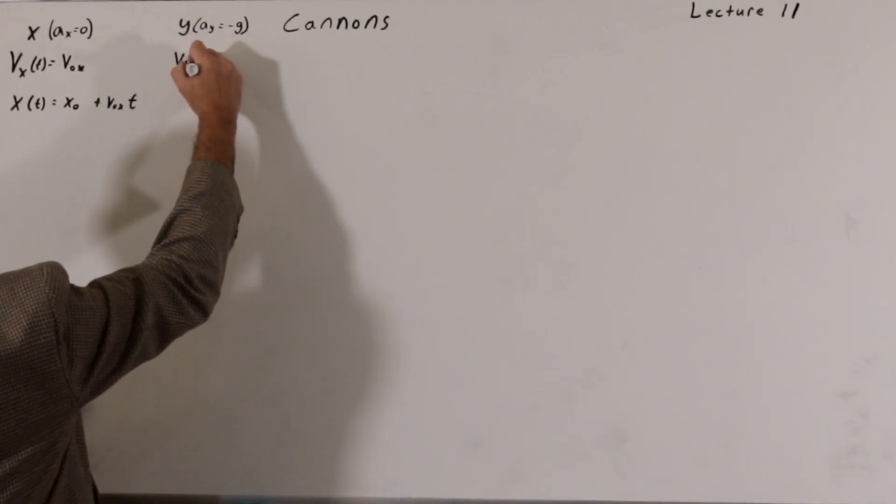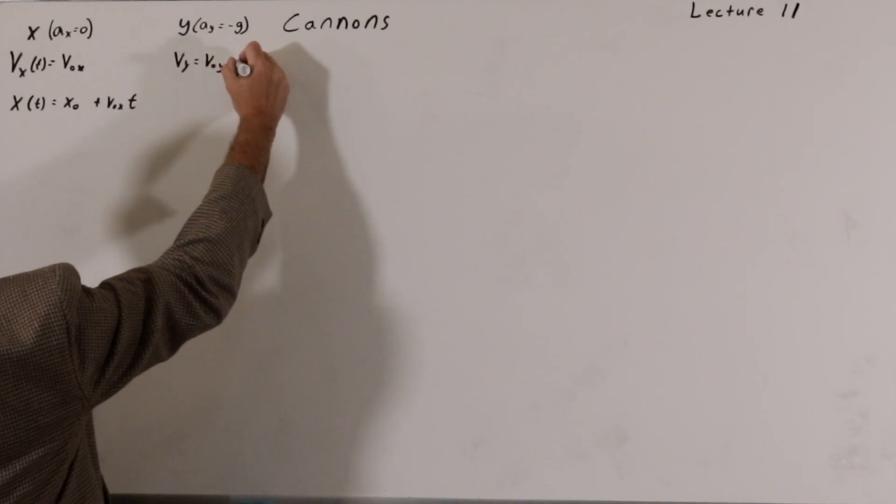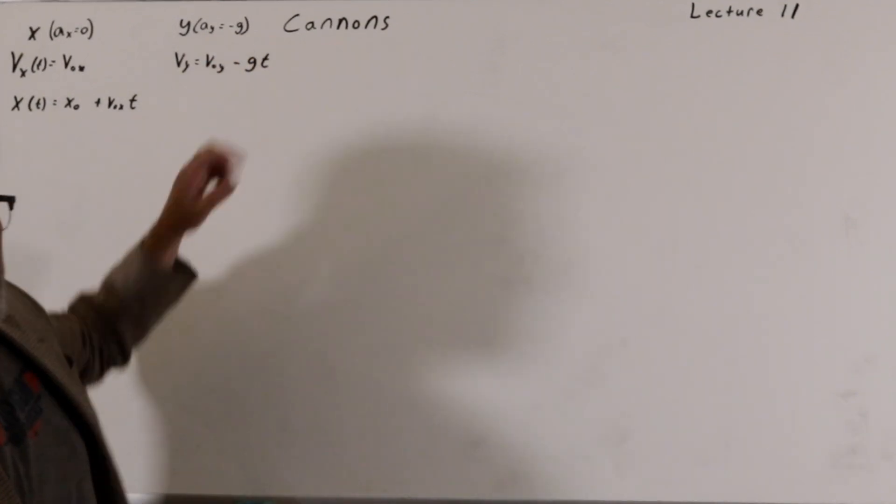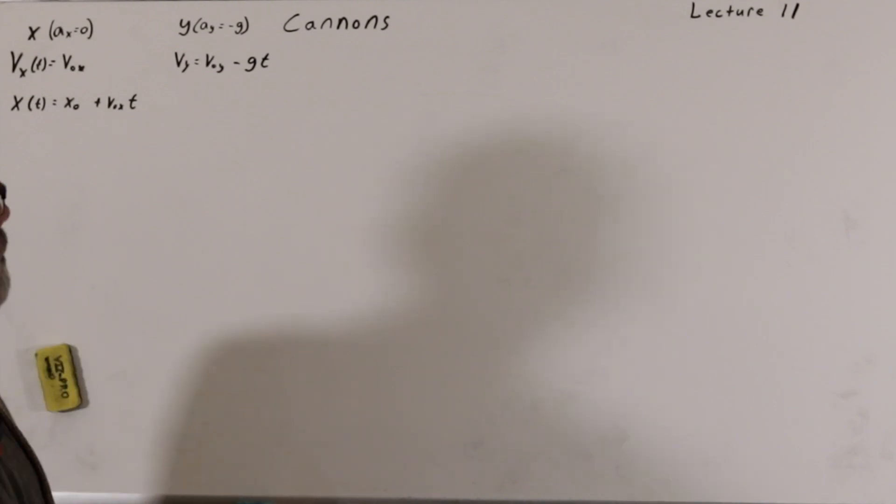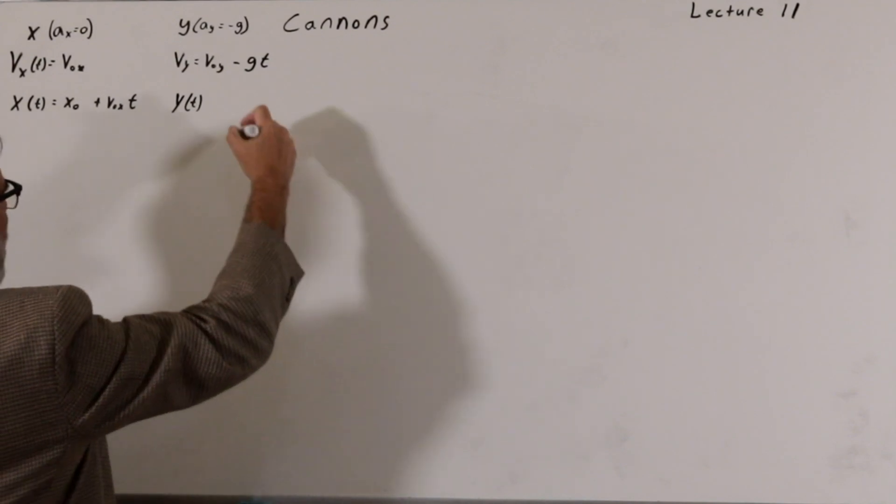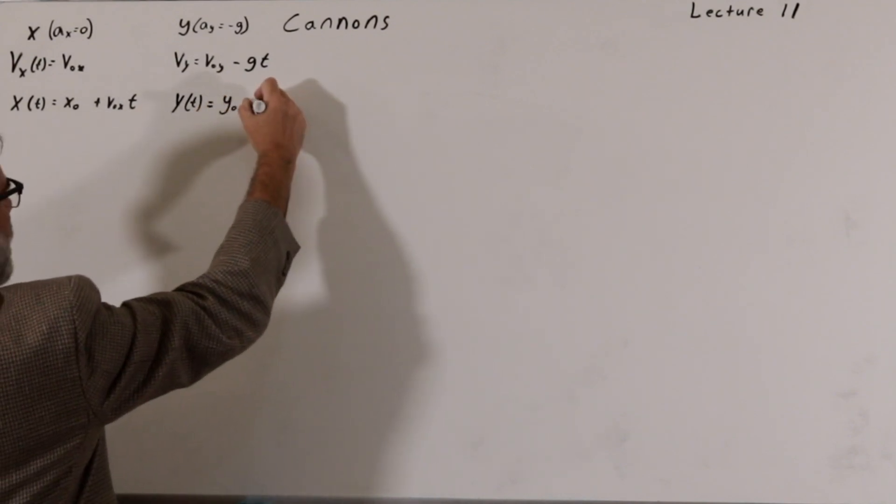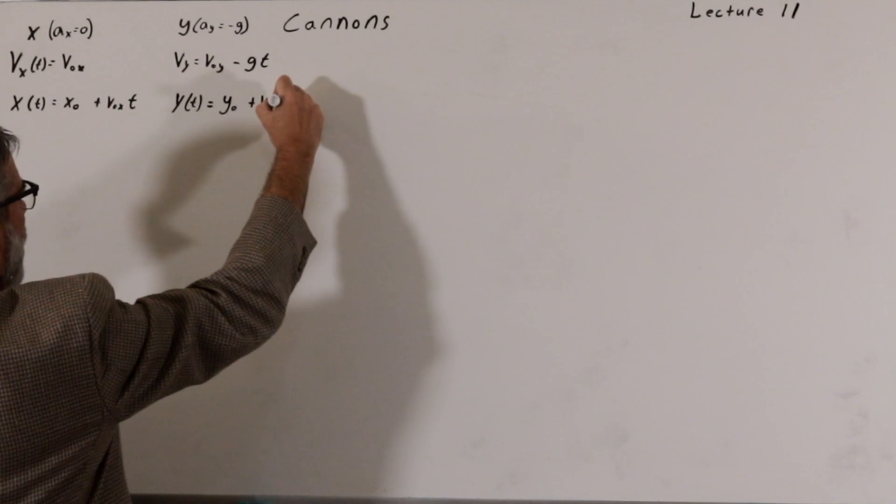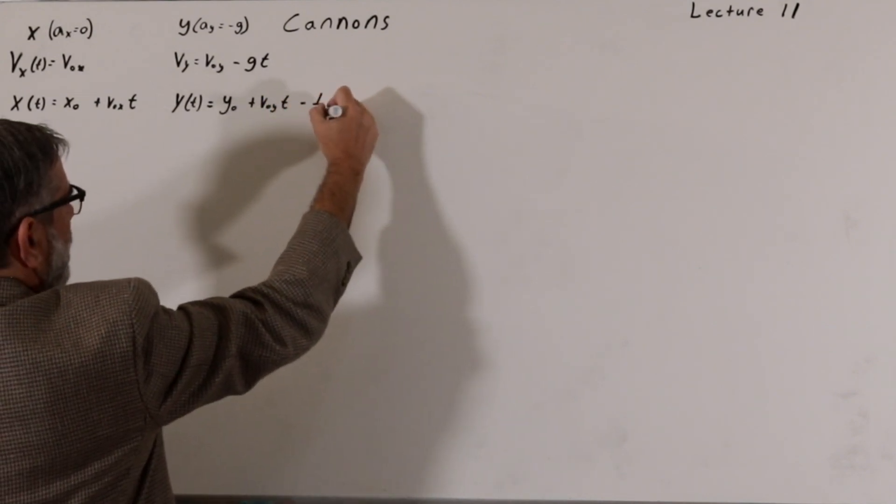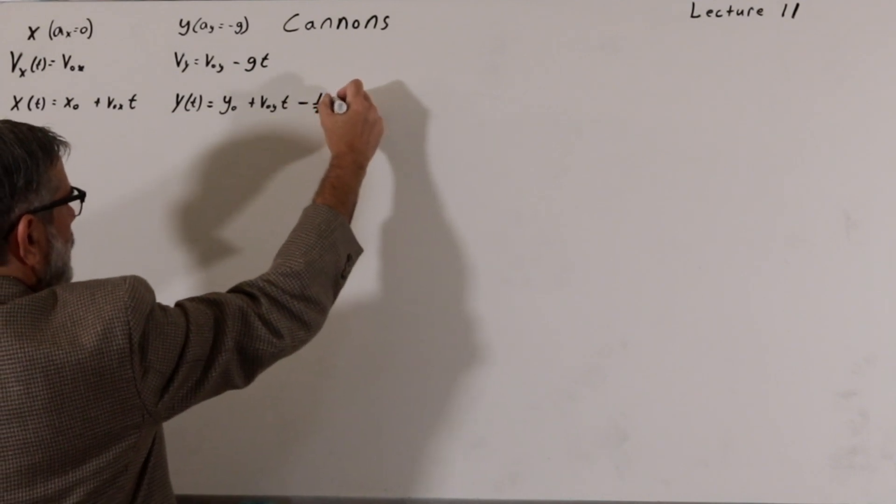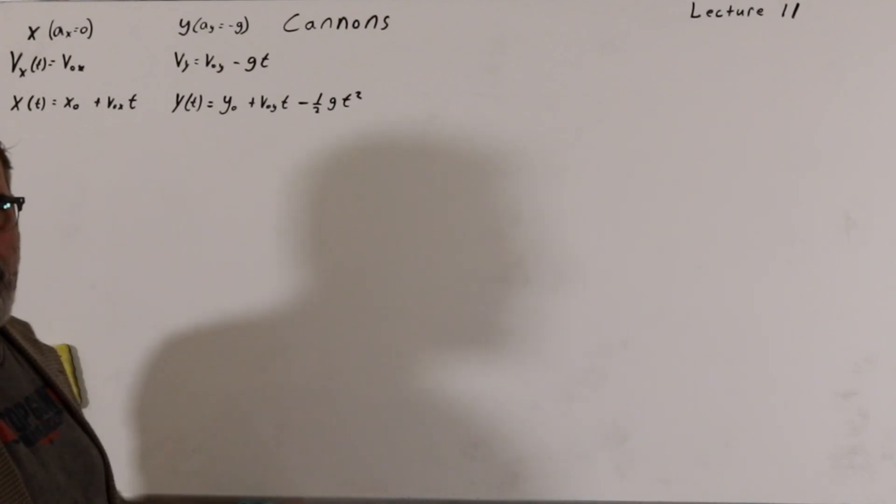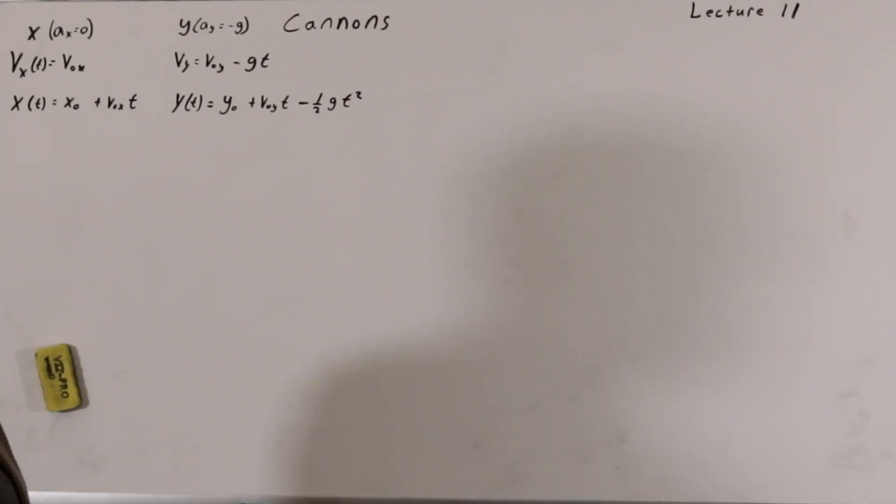Now the velocity in the y direction will be equal to the initial velocity in the y direction minus g times t. So minus whatever component we get from the acceleration. This is just like the 1D problems that we've done before. The position function y, that's how high up we are on the y axis, will be equal to y naught plus v naught y times t, so just like it was for x, but we have the acceleration component acting in the opposite direction, in the downward direction, minus 1 half gt squared. And this is completely analogous to the 1D problems that we did for projectile motion before.